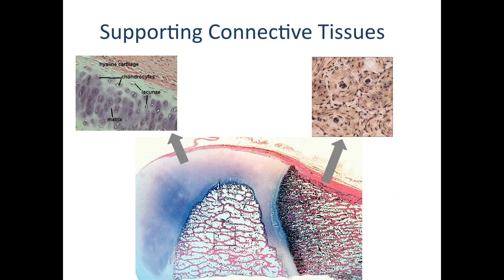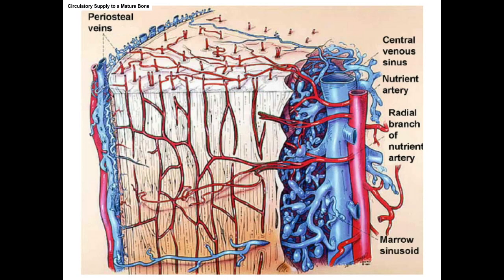This video is going to continue on with supporting connective tissue. Cartilage tissue and bone tissue are closely related and do have some shared features, but cartilage is a tissue that will form structures, while bones are actually organs because they're going to contain several different tissues.